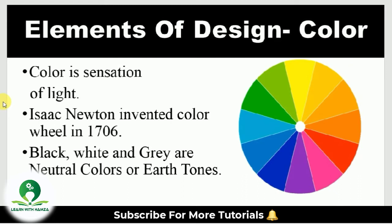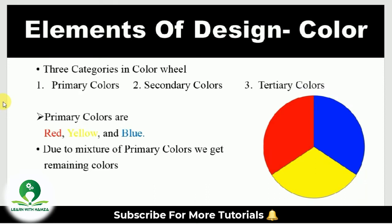Black, white, and gray are called neutral colors or earth tones and are not included in the color wheel as invented by Isaac Newton. The color wheel is divided into three categories: primary colors, secondary colors, and tertiary colors. The color wheel suggests that all colors are made by the combination of primary colors. Primary colors are red, yellow, and blue.